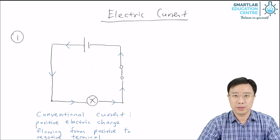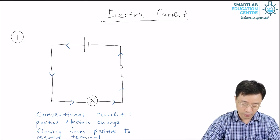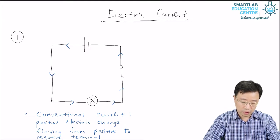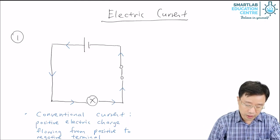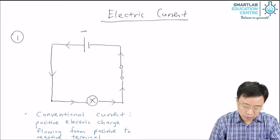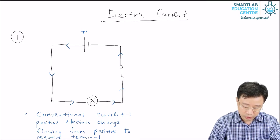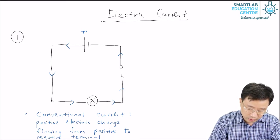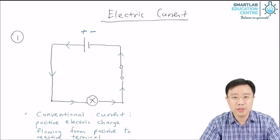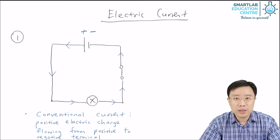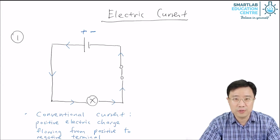There are two types of electric current. The first type is as shown in the diagram here. This is called conventional current. Conventional current flows from the positive terminal of the electric cell, as shown by the blue arrows, to the negative terminal. This is the direction of the conventional current. What is flowing is not electrons — what is flowing is positive charge.